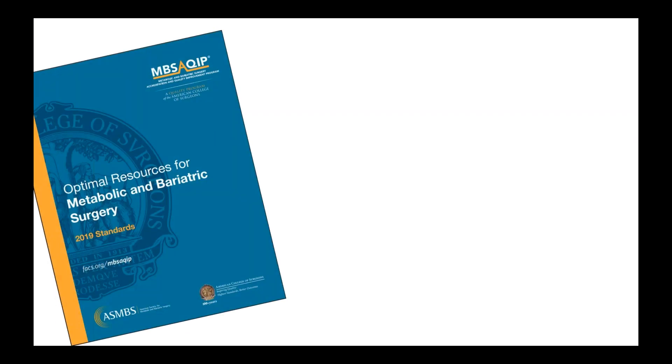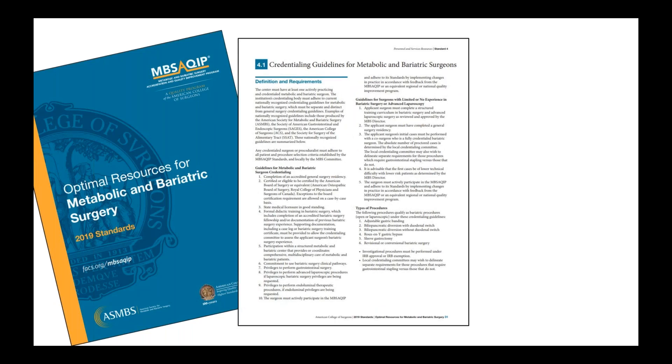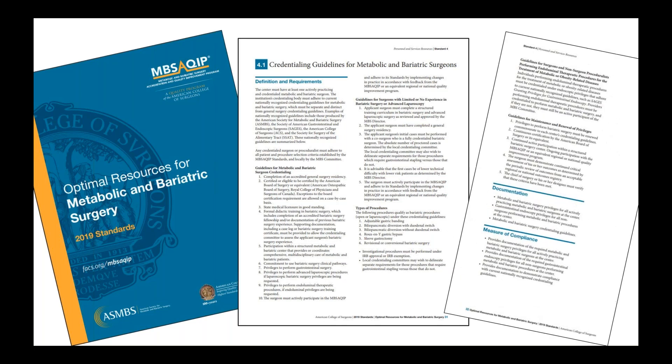Specific recommendations for metabolic and bariatric surgery credentialing guidelines are detailed in the MBSAQIP standards, Optimal Resources for Metabolic and Bariatric Surgery, Standard 4.1, Credentialing Guidelines for Metabolic and Bariatric Surgeons. These serve as an excellent guideline for centers to develop their own unique credentialing guidelines. However, it should be noted that centers do not have to follow these guidelines verbatim.